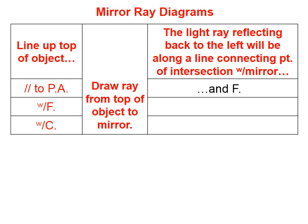First of all, we're going to line up the top of the object parallel to the principal axis and draw a ray from the top of the object to the mirror. The light ray reflecting back to the left will be along a line connecting the point of intersection with the mirror and the focal point.